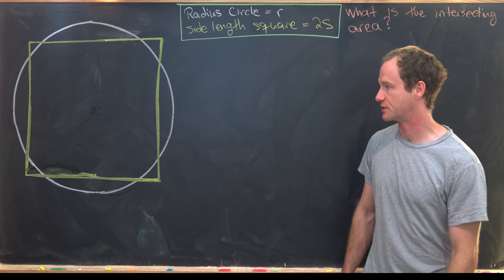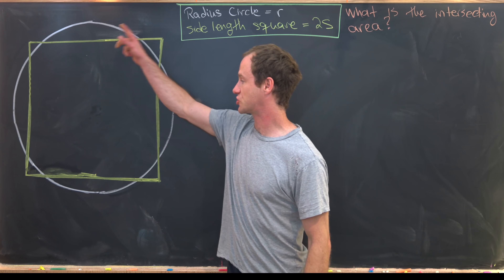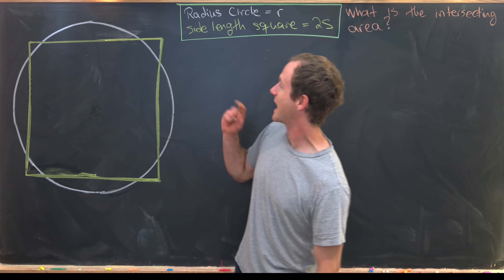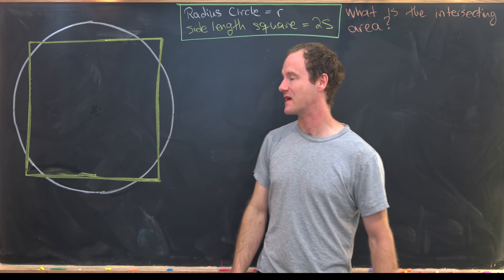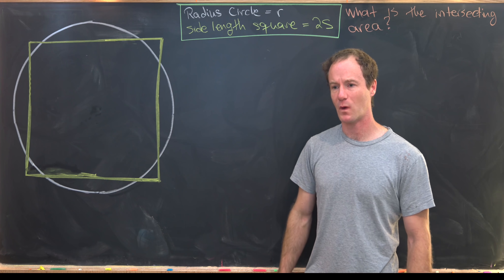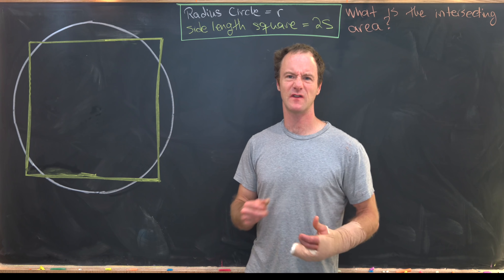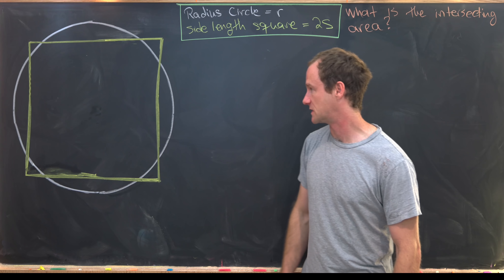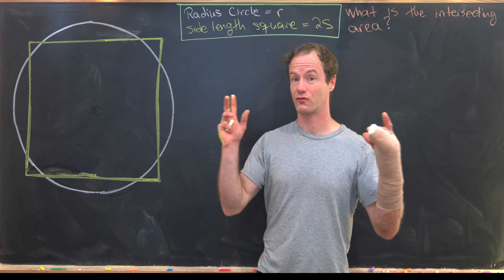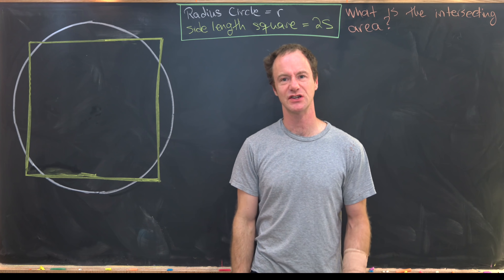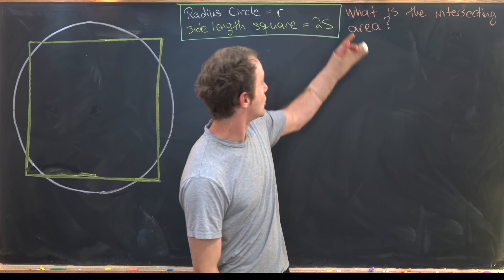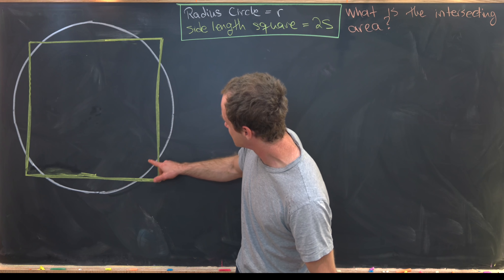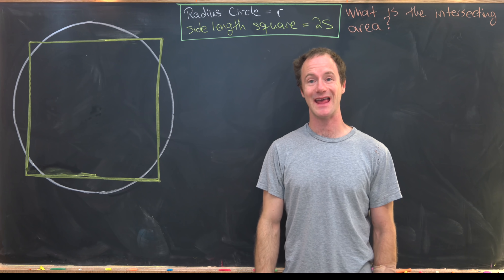Here we're going to look at a pretty interesting geometry problem. We have a circle with radius r and a square with side length 2s. You might ask why 2s instead of just s — think of s as the radius of the square, analogous to the radius of the circle. Our goal is to find the intersecting area: the region that's inside both the square and the circle.